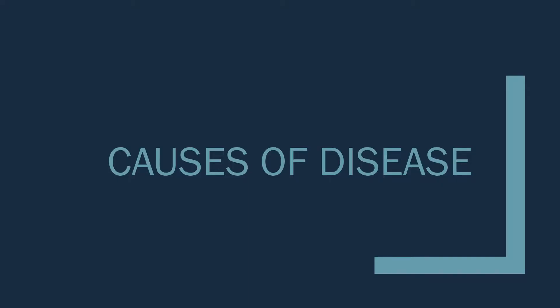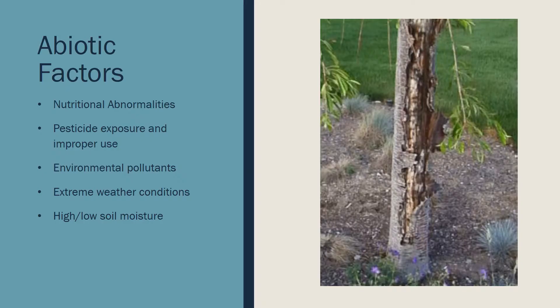The susceptibility of a plant to acquire disease is dependent on a range of abiotic and biotic factors. Abiotic factors include nutritional abnormalities, which often show up as discoloration of foliage, divided into nutritional deficiencies and mineral toxicity. Other abiotic factors include pesticide exposure and improper use, which can cause serious damage to plants; environmental pollutants in the air, water supply, or surrounding environment; extreme weather conditions, which can lead to plant injury; and high or low soil moisture resulting from excessive watering, poor drainage, or floods, which may cause plants to turn yellow and become stunted.